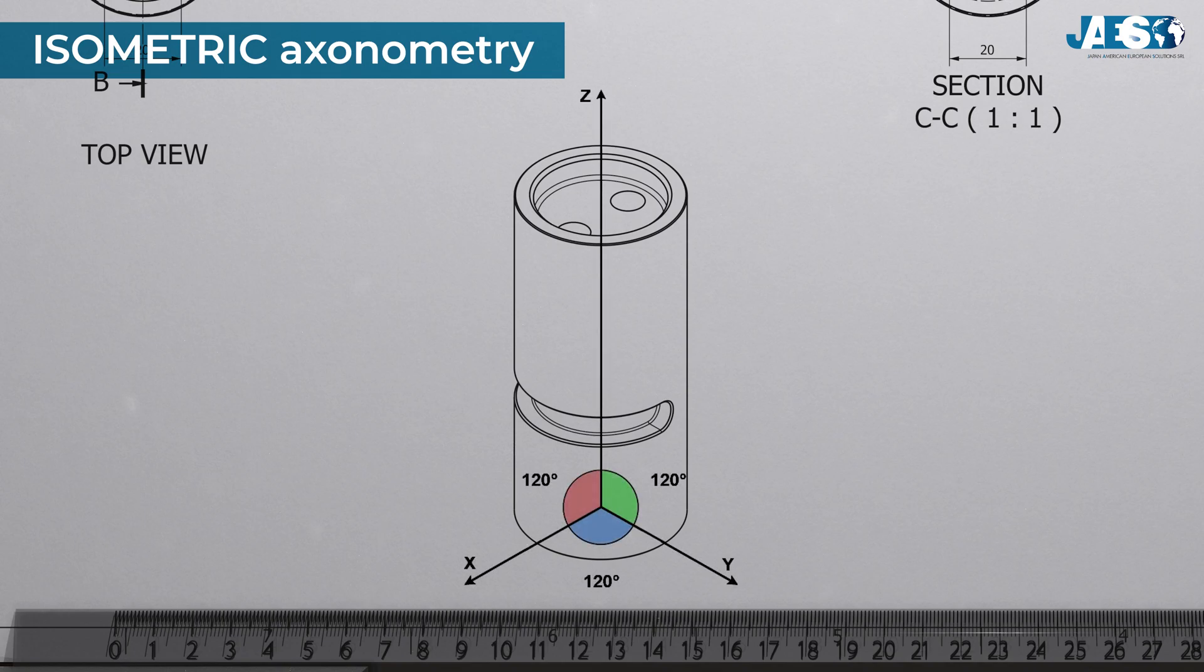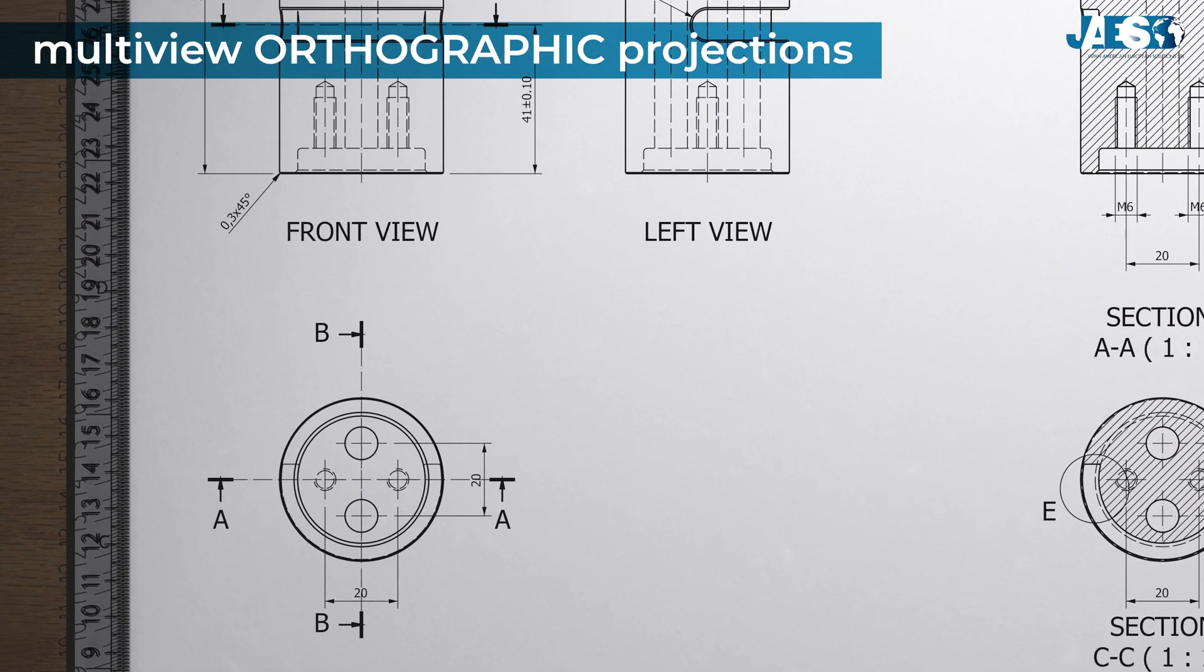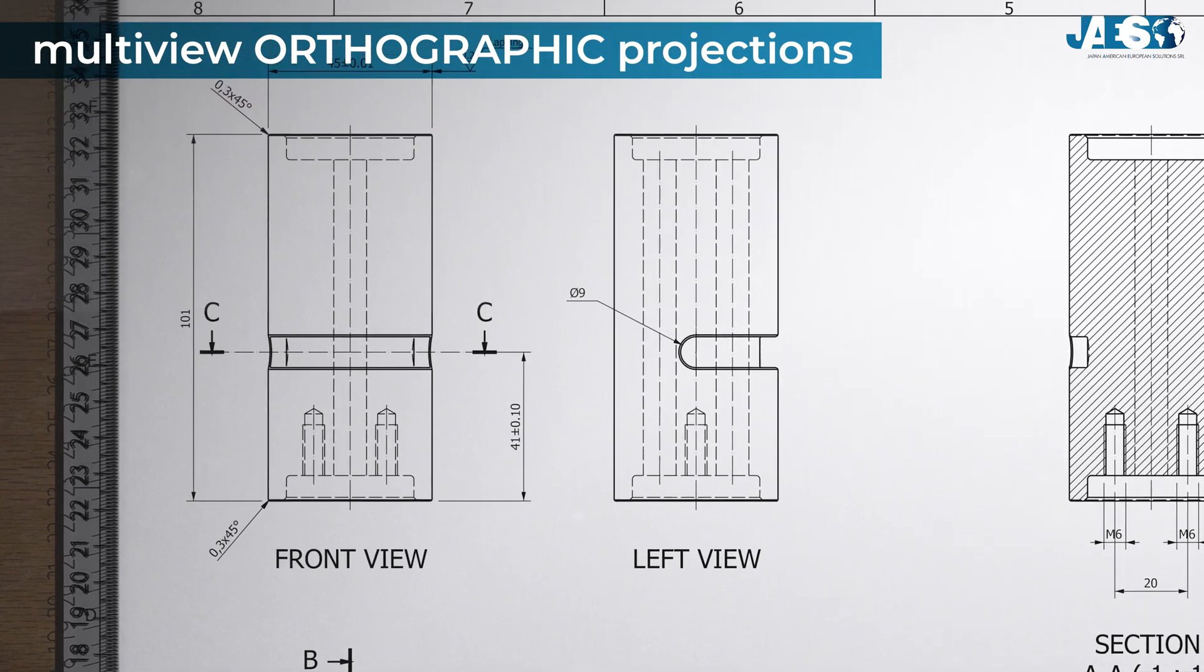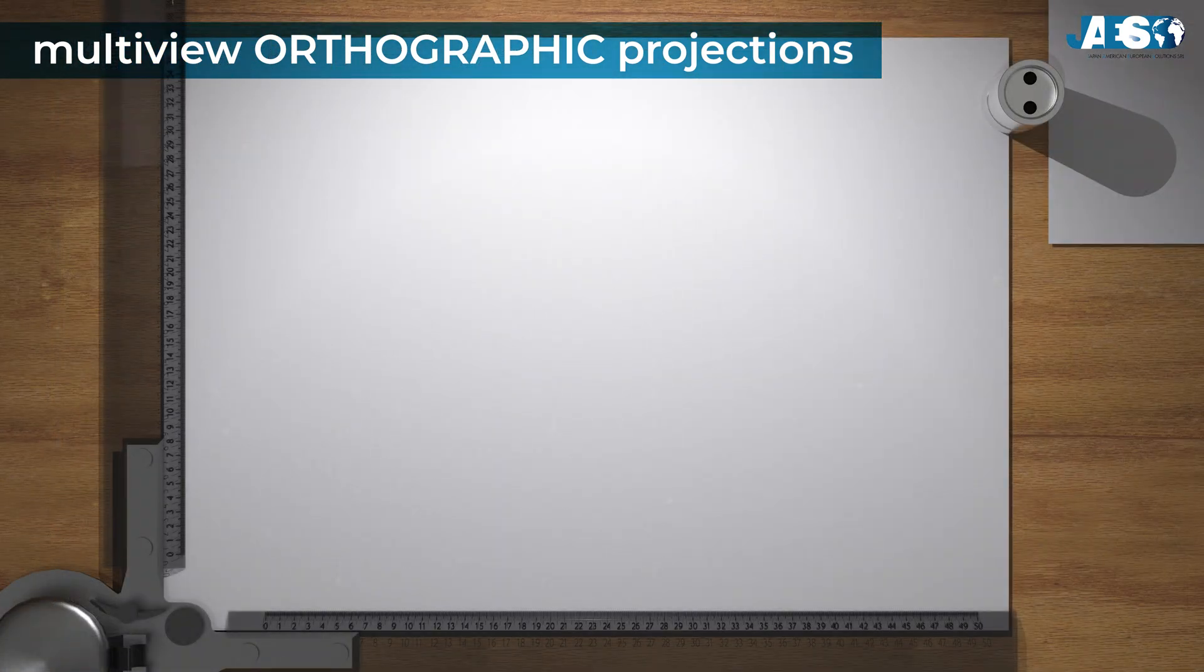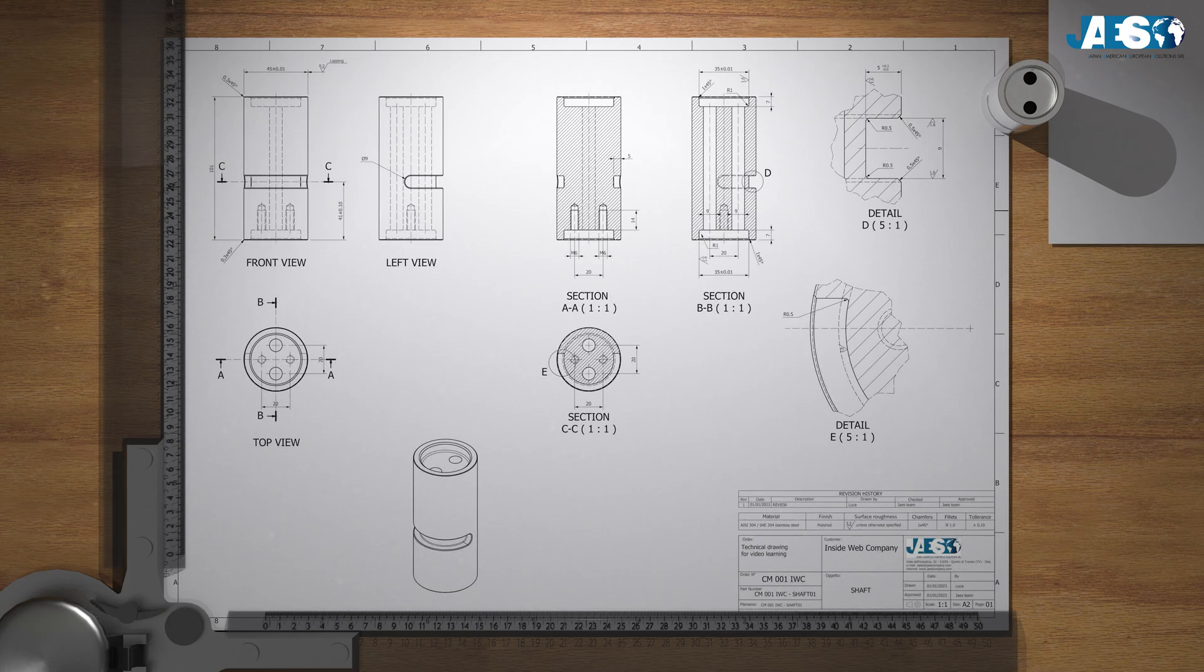Then we have the multi-view orthographic projections. To understand the shape of this object, we need three of them. In essence, there are up to six two-dimensional images representing perpendicular views of the object. But the first thing to do to understand orthogonal projections is to read the title block, a table usually in the lower right corner in which all the primary information is enclosed.